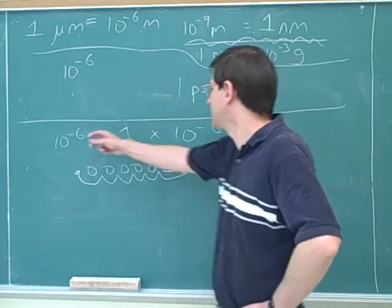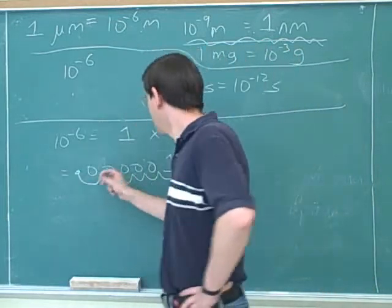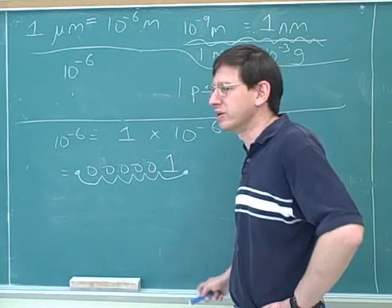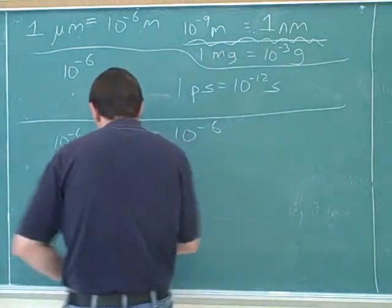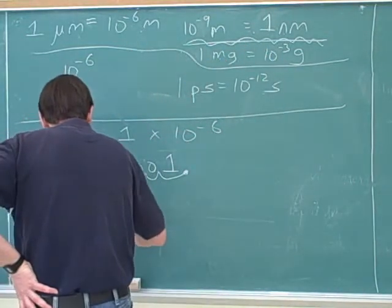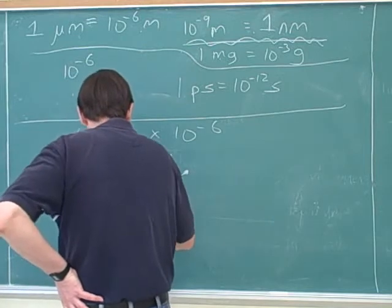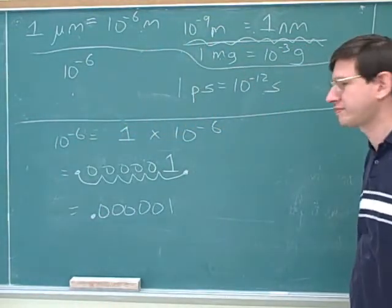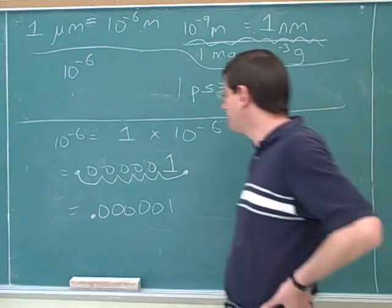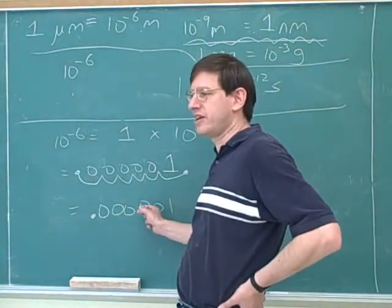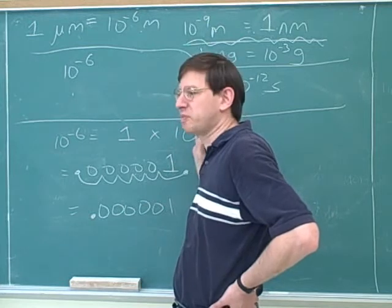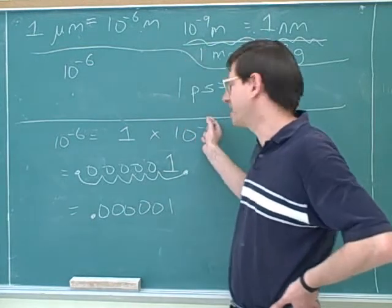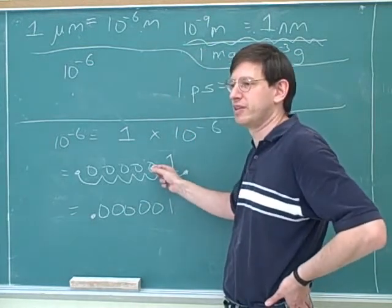And this is how you would write 10 to the negative six if you wanted to write like a straightforward number. Let me rewrite this one more time so it's easier to see it. So it turned out to be 0.0000001. Notice that there's only five zeros to the right of the decimal point even though we move the decimal place six places. That's a common mistake because the first time we moved it, we were just moving around the number one.